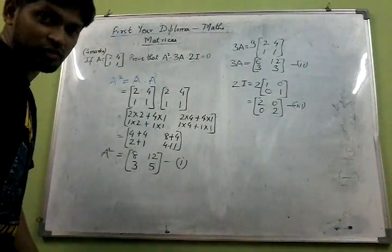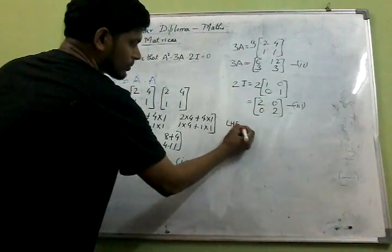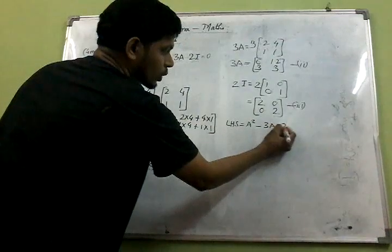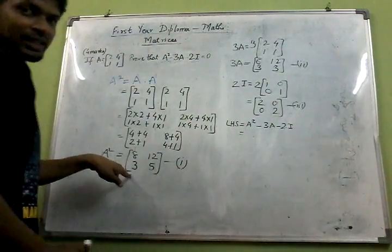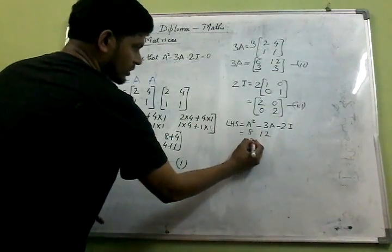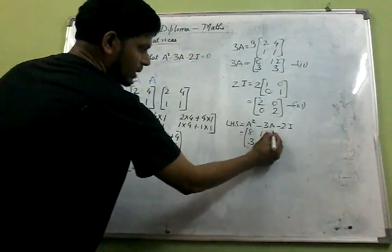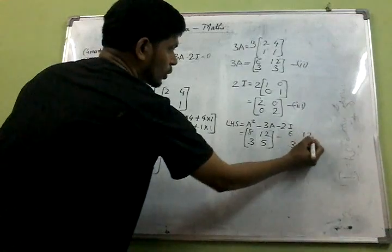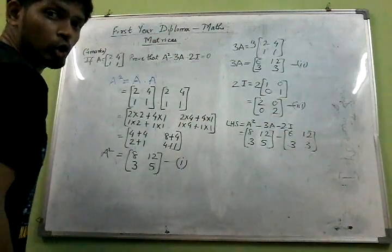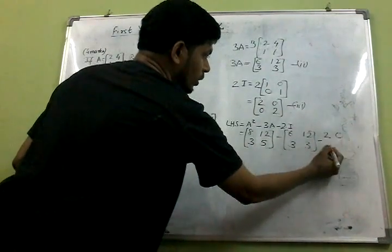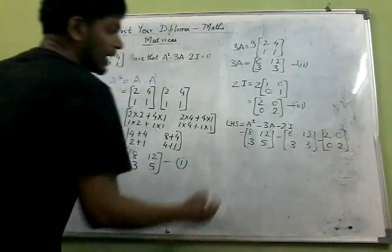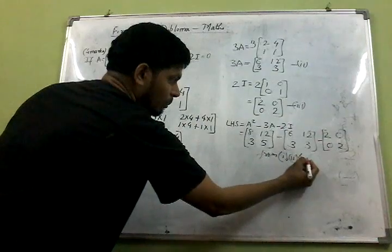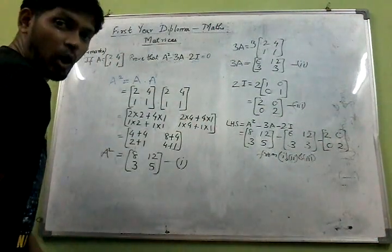Now we will take the left hand side which we need to prove. Left hand side is equal to A squared minus 3A minus 2I. That will be equal to A squared — that is 8, 12, 3, and 5 — minus 3A — that is 6, 12, 3, and 3 — minus 2I, that is 2, 0, 0, 2. These values are taken from point number 1, point number 2, and point number 3.